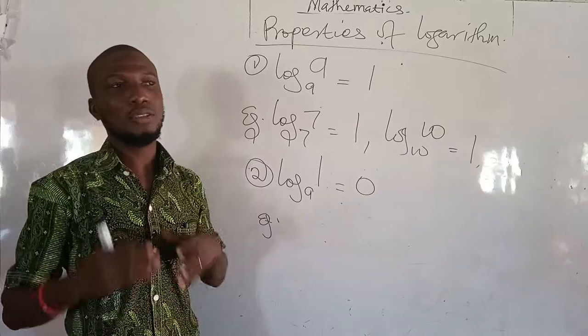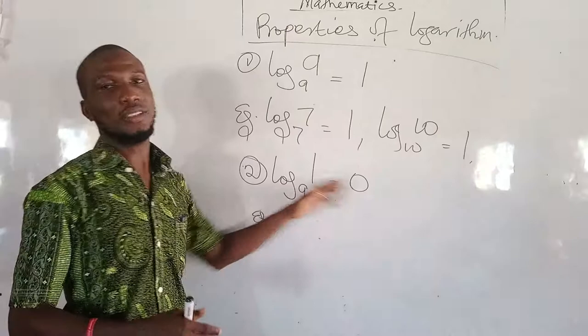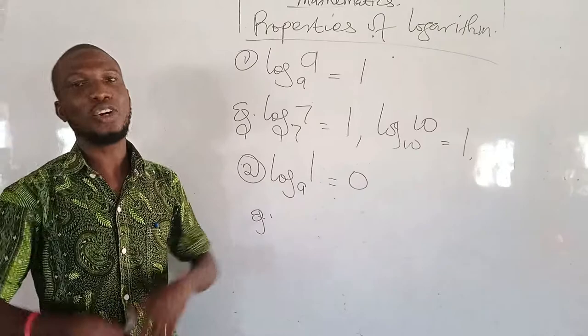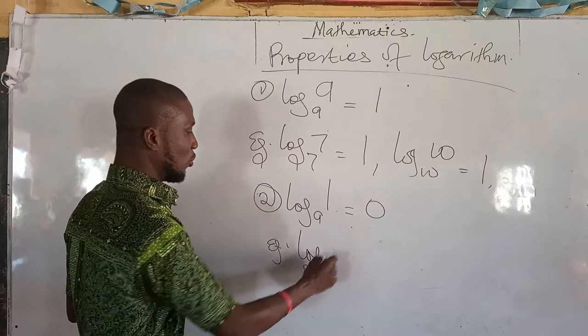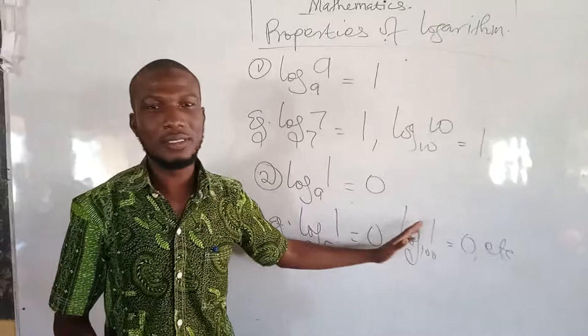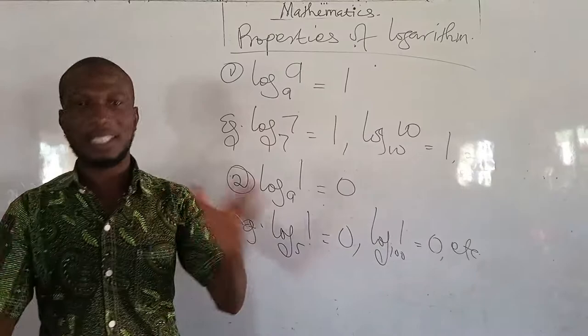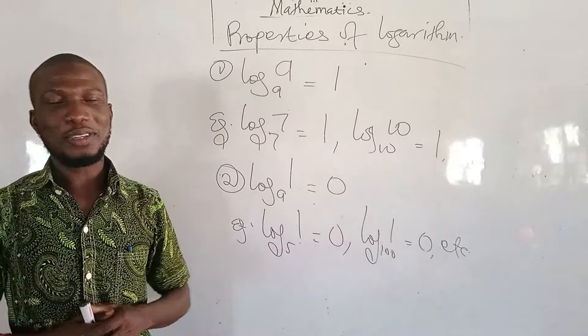The second property is log_a(1) = 0, meaning that the logarithm of 1 to any base is always 0. This makes sense because any number to the exponent 0 is 1. For example, log 1 base 5 is 0, log 1 base 100 is 0. It doesn't matter the base - if you are taking the logarithm of 1, your answer will be 0. You can verify these two properties with your calculator.